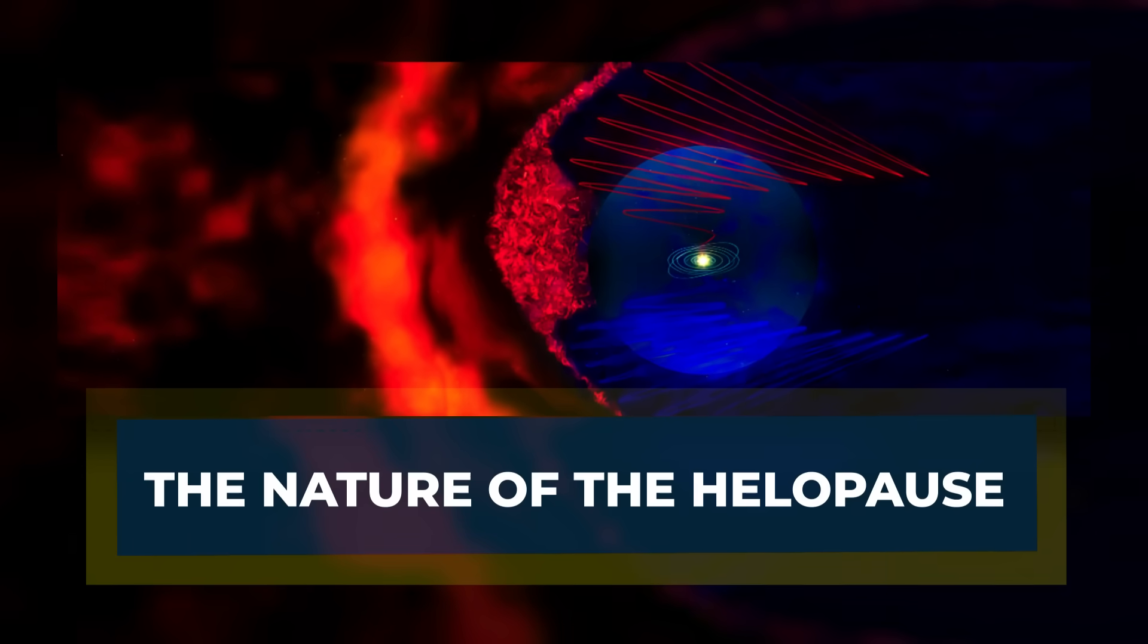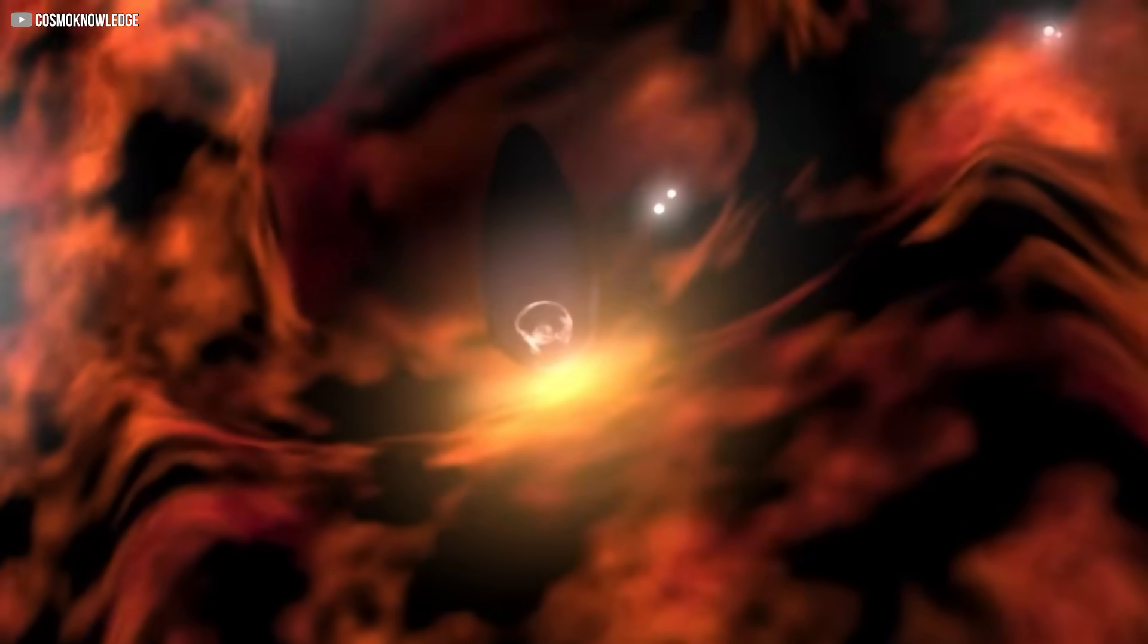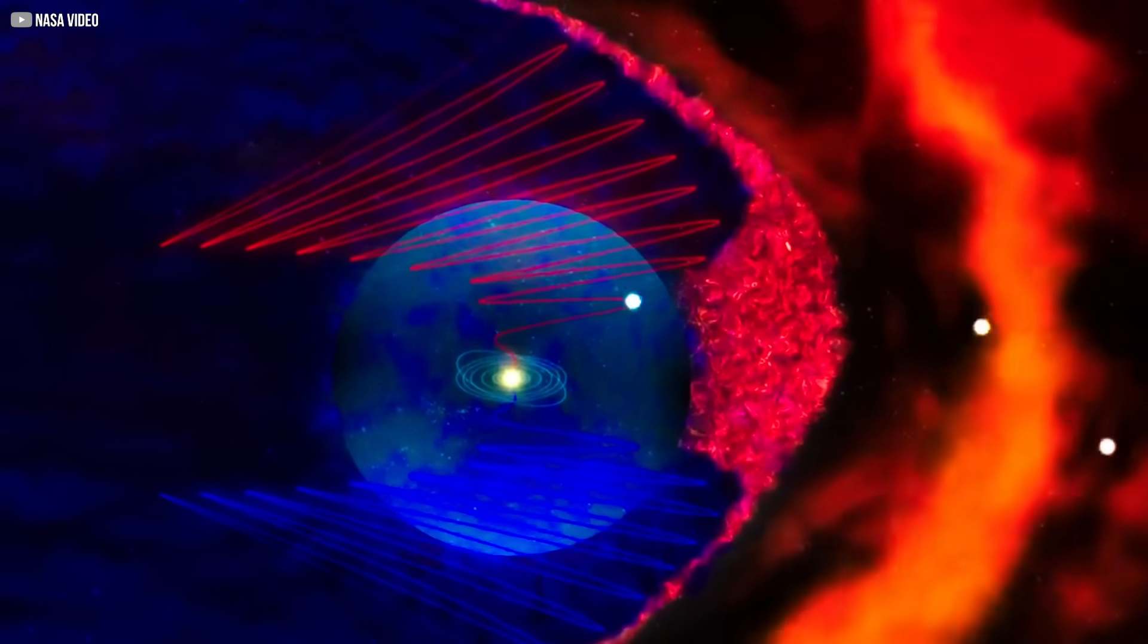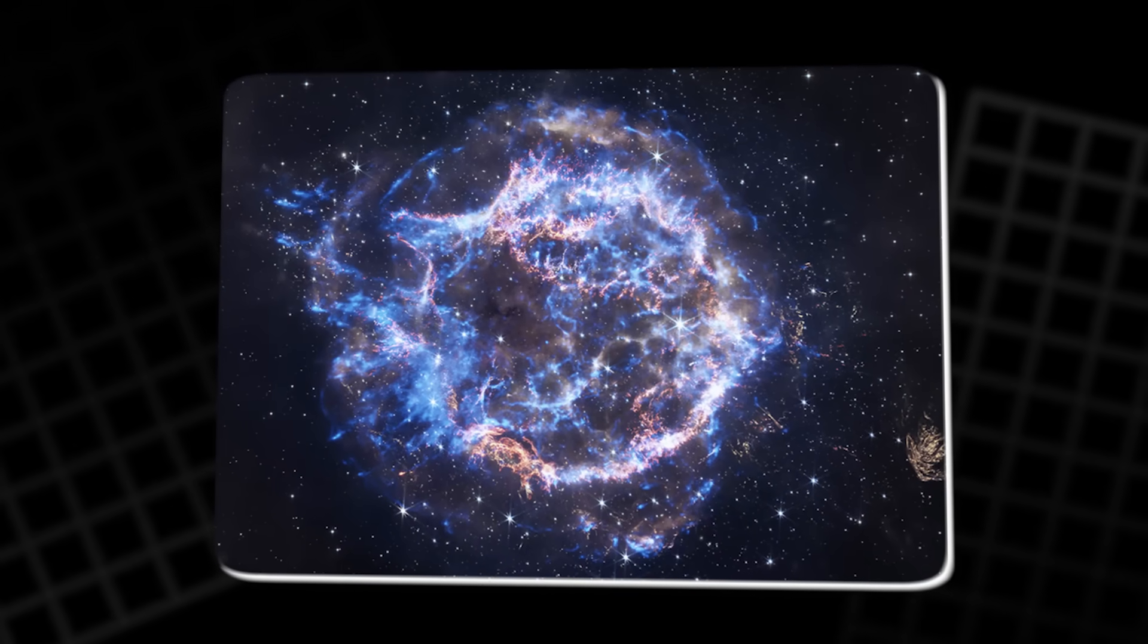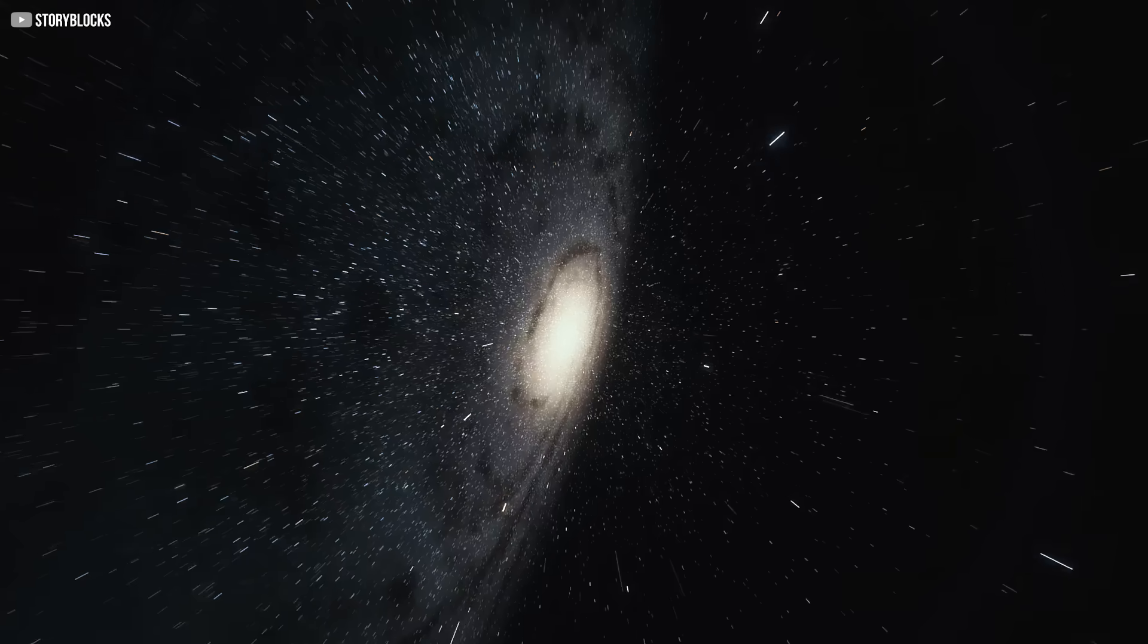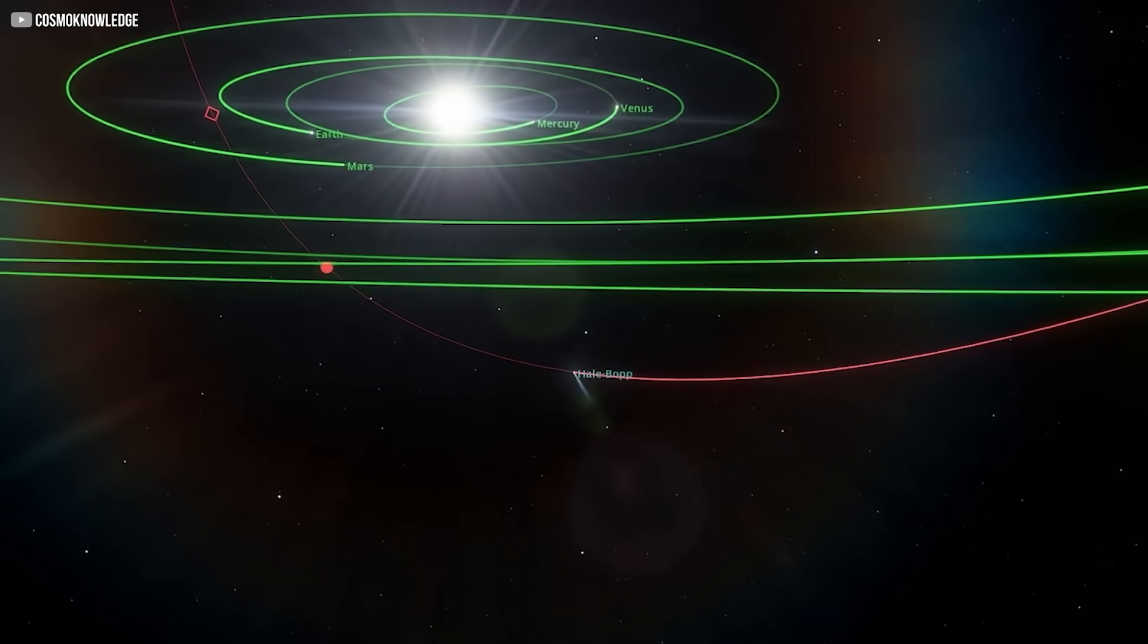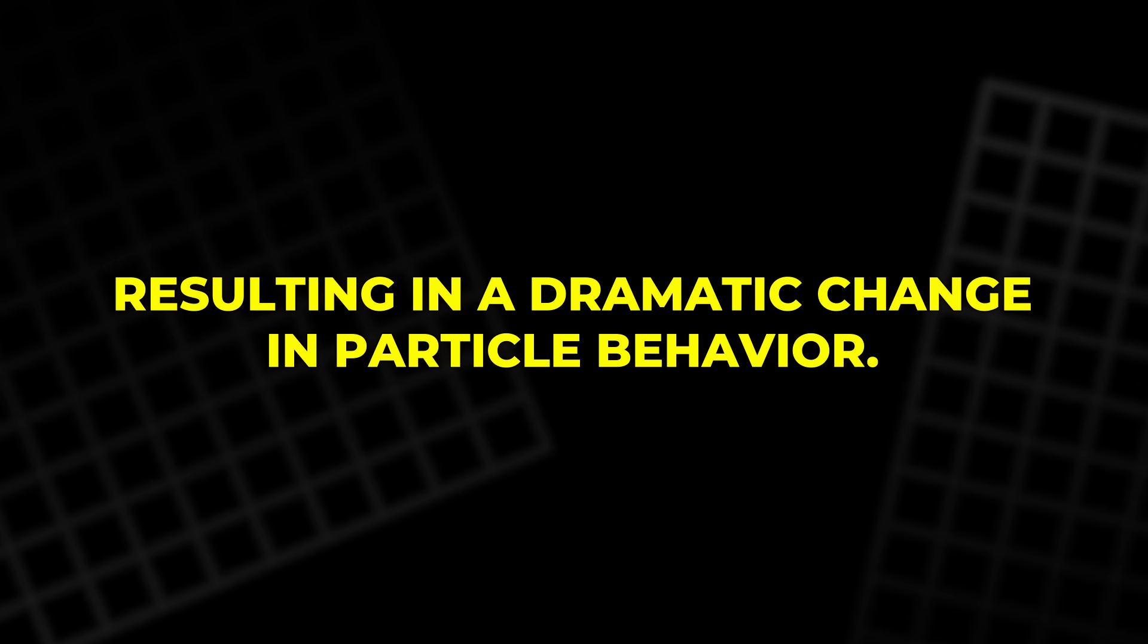The heliopause is not a rigid, fixed boundary, but rather a fluid, shifting region that fluctuates in response to the Sun's activity. It acts as a dynamic interface between two vastly different environments, the hot, charged solar wind and the cold, sparse interstellar medium. As the solar wind travels outward, it gradually loses energy until it encounters the opposing pressure of the interstellar material. This interaction creates a zone where the solar wind slows down, compresses and even turns, resulting in a dramatic change in particle behavior.